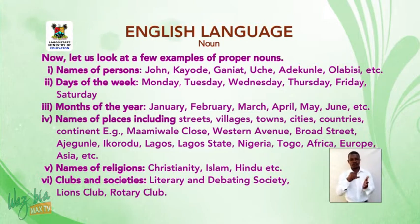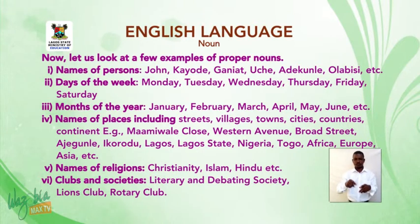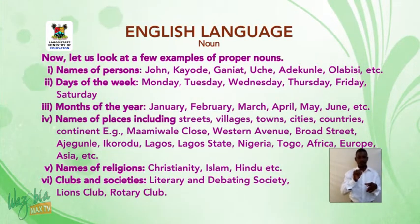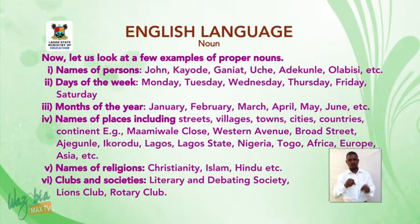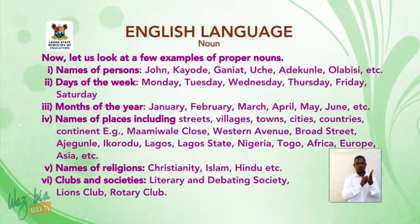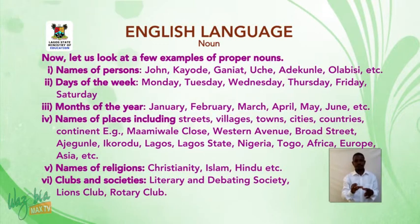Months of the year: January, February, March, April, May, June, etc. Names of places, including streets, villages, towns, cities, countries, continents — e.g., Mawamewale Close, Western Avenue, Broad Street, Adekunle, Ikorodu, Lagos, Lagos State, Nigeria, Togo, Africa, Europe, Asia, etc.